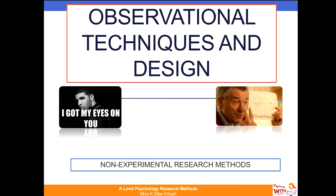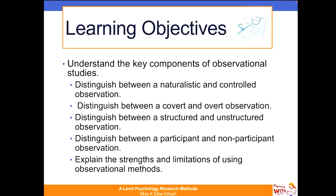This lesson is focused on observational techniques and design in psychology. It's a non-experimental research method. In terms of our learning objectives, we want to be able to understand the key components of observational studies, distinguish between naturalistic and controlled observations, distinguish between covert and overt observations, between structured and unstructured, between participant and non-participant, and also to explain the strengths and limitations of using observational methods.